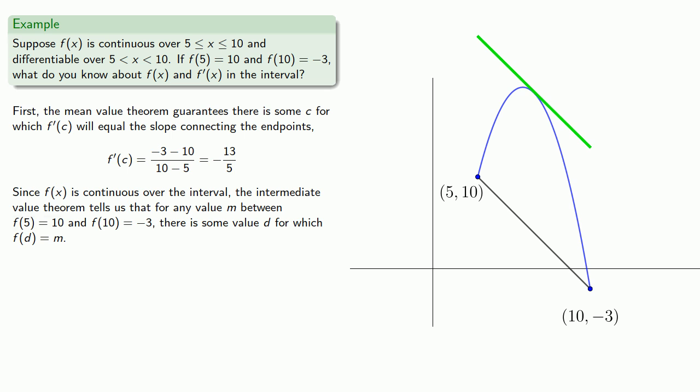And well, this is positive, this is negative, so we know that f of x equals 0 has some solution, x equals d, where d is between 5 and 10.